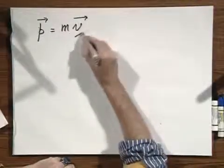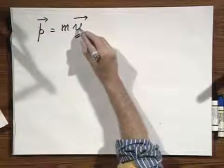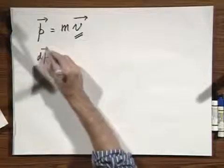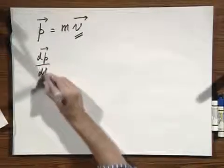This velocity can only change if there is a force acting upon this. If I write this down as dp dt, take the derivative,